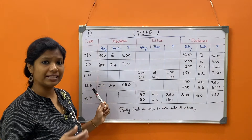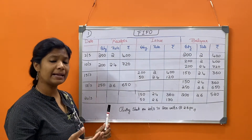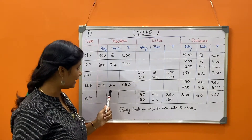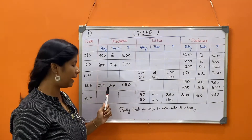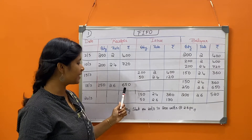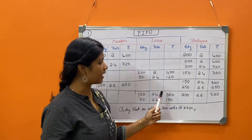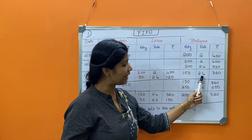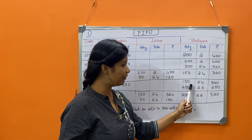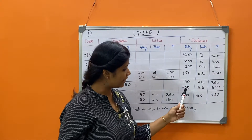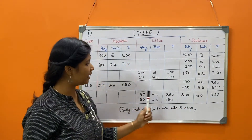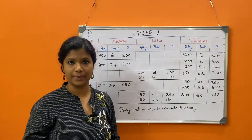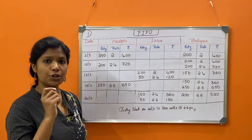Moving to 18th March: the company received 250 units at rate 2.6, so 250 × 2.6 = 650 rupees. For the balance, first carry forward the previous day's balance — 150 units at rate 2.4, value 360 rupees — then add today's receipt: 250 units at rate 2.6, value 650 rupees.